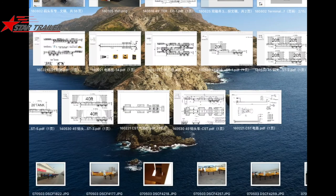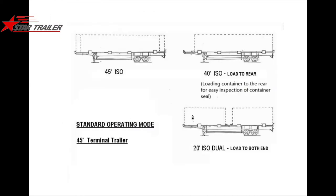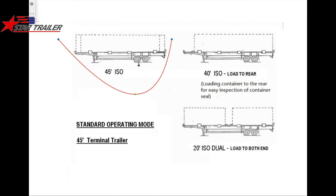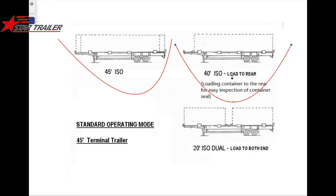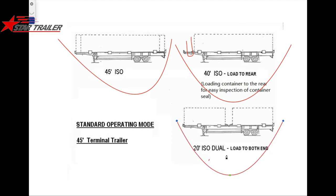Now back to the semi-trailer. We have different configurations for the terminal trailer. As you can see from the picture, this is a 45-foot container position loaded to the rear — of course you can load to the front if you like. Here is the two 20-foot container position, where you can see the container block is in the middle and blocking.